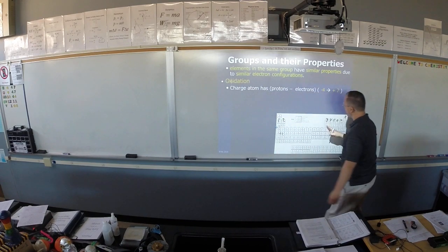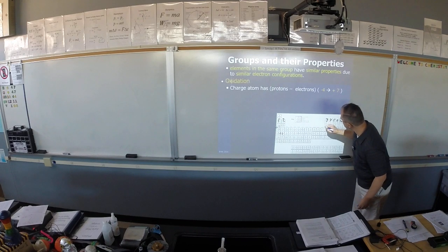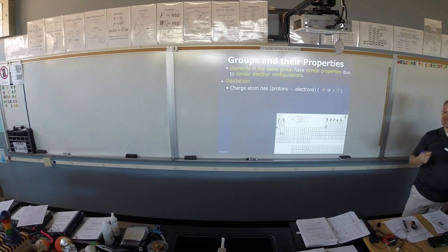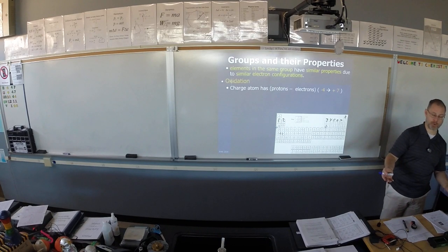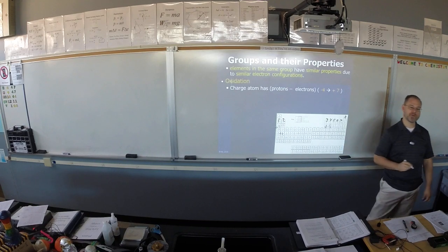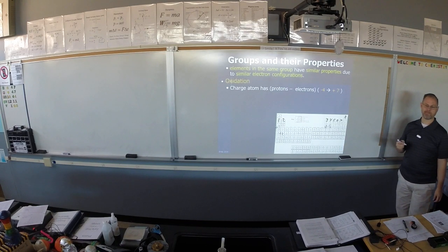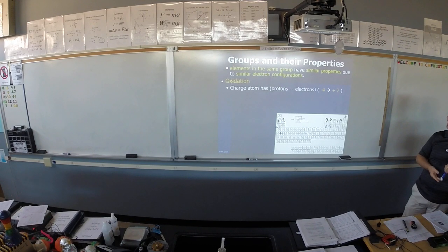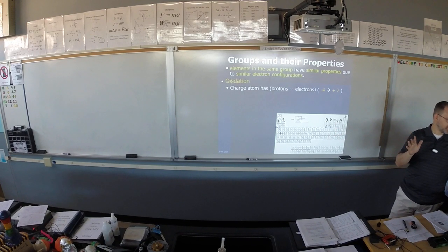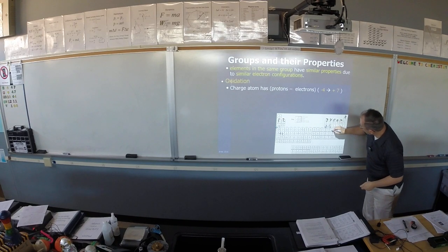We're going to skip over the d-block and come back. Group 13 is plus three. Now group 14 is kind of interesting because it has four valence electrons — it is equally easy for group 14 to gain four or lose four. So group 14 gets plus four or minus four, whichever it needs. With groups five, six, and seven we're only going to deal with the most likely ion. Nitrogen's group has five valence electrons — is it easier to lose five or gain three? Gain three. So nitrogen's group is minus three.